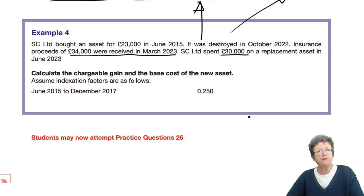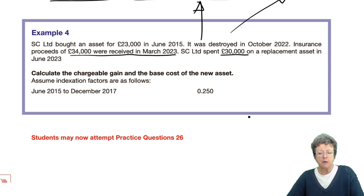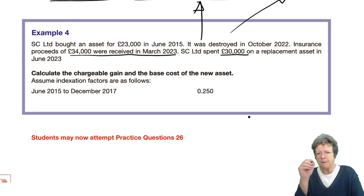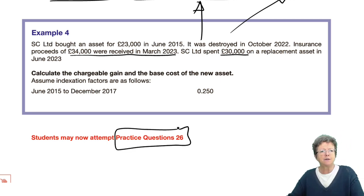So we've covered some new topics in this chapter, particularly with assets destroyed or where we've had insurance claims where things have been damaged. The other parts of the chapter are a repetition of the individual sections. I would go through this chapter again, find questions in the BPP manual for the multiple choice, and do those to make sure it's gone in. We do have a practice question number 26.